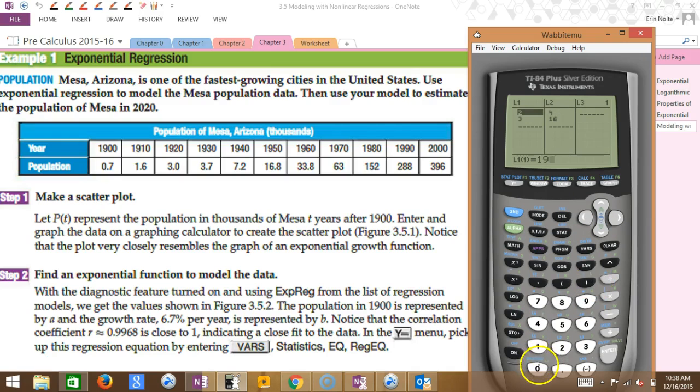What I'm going to do is input my year, my independent variable, into the list 1 column and then my dependent into list 2, so that'll be the population. This is going to take me a long time. I'll be perfectly honest, this calculator is so slow.